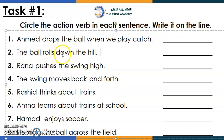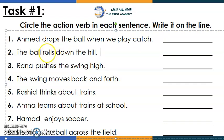Let's move to number two: 'The ball rolls down the hill.' Here is the noun. Usually the action verb comes after the noun. So here's the noun — the ball — and what comes after the noun is the action verb, which is 'rolls.' Well done!